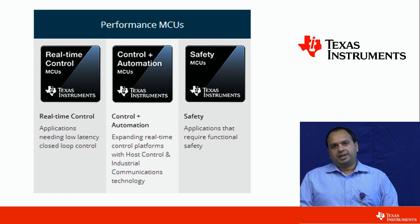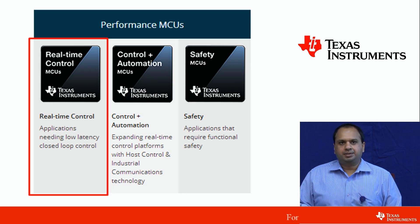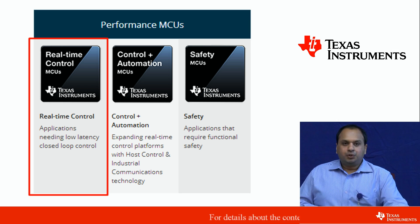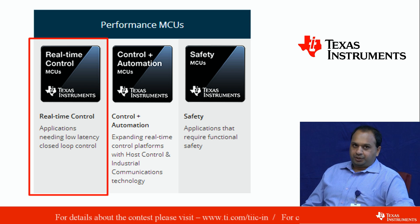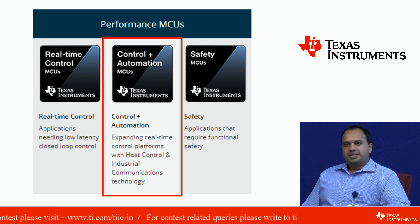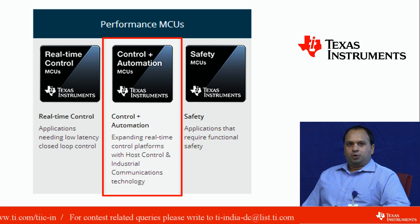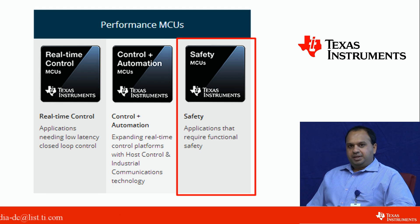Let's move on to the second broad category which is the performance MCUs. In the performance MCUs we also have three subcategories. The first one is real-time control MCUs. For applications where you need low-latency closed-loop control — such as digital power, LED lighting or motor control — you can use the real-time control MCUs. For applications where you need real-time control as well as industrial communication capabilities, like automation and process control or human machine interface, you can use the second category which is control plus automation MCUs. Finally, the safety MCUs — for applications where you need to guarantee functional safety, such as avionics, automation and transportation — you can use the final category which is the safety MCUs.